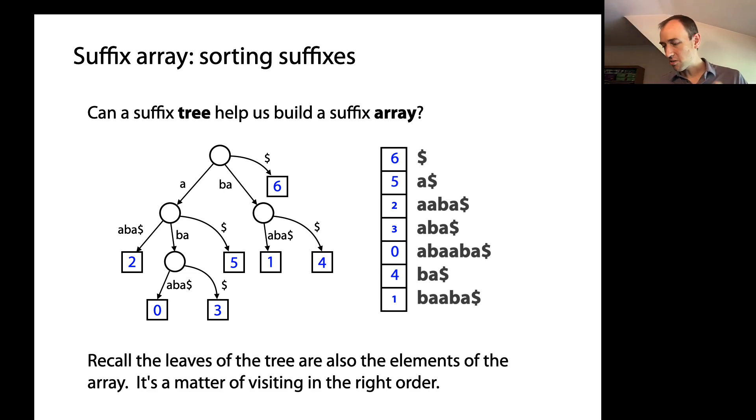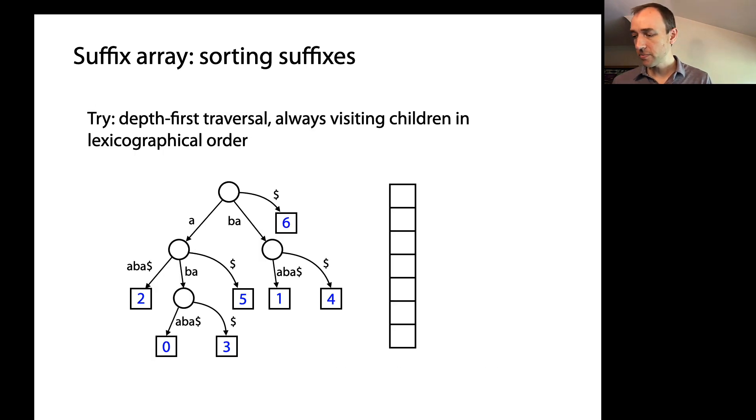Recall that the leaves of the tree are just also the elements of the array. So if we wanted to try to do this, it would really just be a question of visiting the leaves in the right order. If we visit them in the right order, we can essentially read off the elements of the suffix array as we go. So let's try an idea. Let's do a depth first traversal of our suffix tree and with one slight modification. We're not just going to visit the children of a node in any order. We're going to visit the children of a node in alphabetical order. So for example, right off the bat when we have to decide how we're going to descend from the root, we have three choices. We can descend on an edge labeled A, an edge labeled BA, or an edge labeled dollar sign. We're going to pick the edge labeled dollar sign first because that's the one that comes alphabetically first out of all those edges.